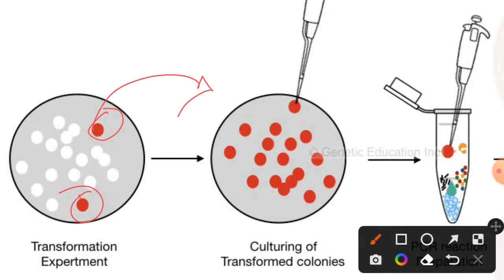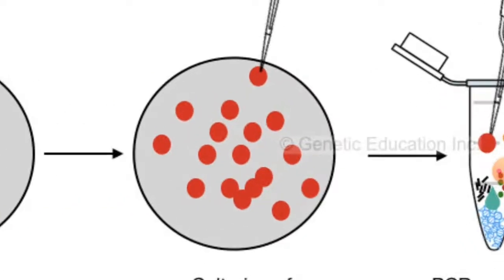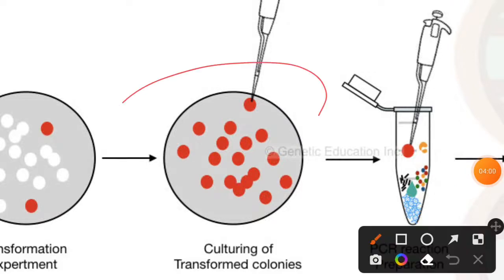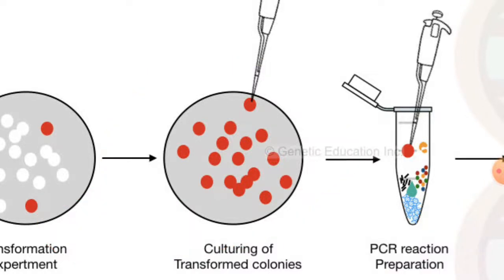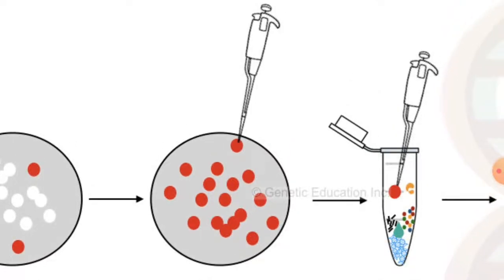Now after that, this is our library. This library contains the entire DNA of a genome. Now you require immediate detection of a gene of interest that is present in that particular organism. So what you should do?